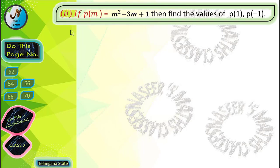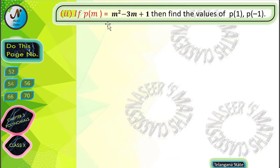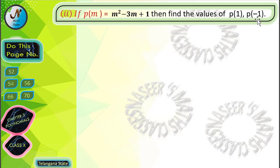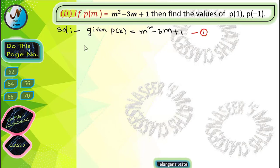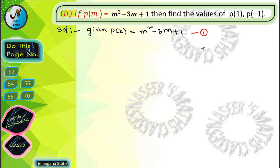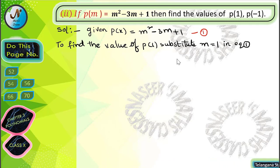Now we solve the second problem. It is given that p(m) is equal to m square minus 3m plus 1. Find the values of p(1) and p(-1). First, write the given polynomial p(m) = m square minus 3m plus 1. Let this be equation 1.